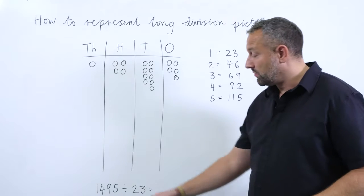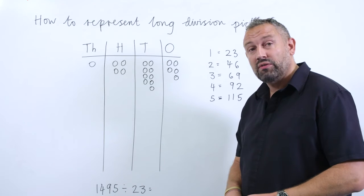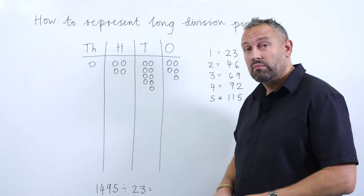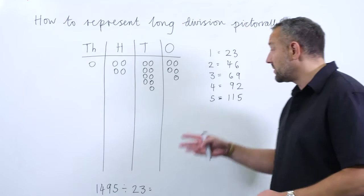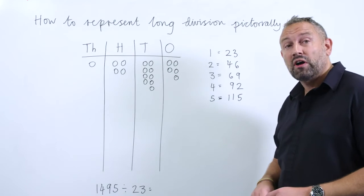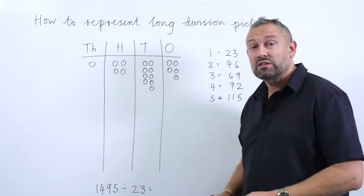Okay, here we have our question: 1495 divided by 23. It's also worth noting that we do a similar method to the last question, which is to write down the first five multiples of the divisor, in this case 23.